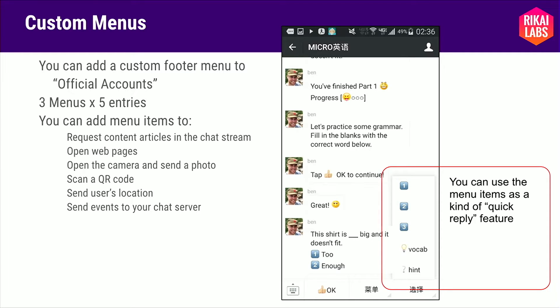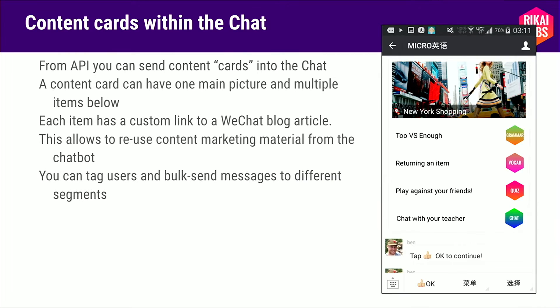I'm going to briefly run through some of the other APIs and features available. WeChat allows you to provide custom menus — you can enable these little pop-up menus not just for sending messages to your bot, but also for other features like opening the camera, sending your location, or sending a QR code. You can publish content cards that include links and images, and also messages to your bot. One thing you can do with a bot is tag users, put them into different groups, and use those groups to show different cards to different users. WeChat is a marketing engine, so many methods for publishing content to different user segments are available through the platform.